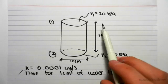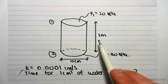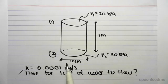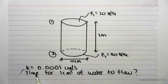So we have this cylinder here, and we're given the pressure at 1 and the pressure at 2. We're given the height of the cylinder, its diameter. We're given k equals 0.001 centimeters per second.